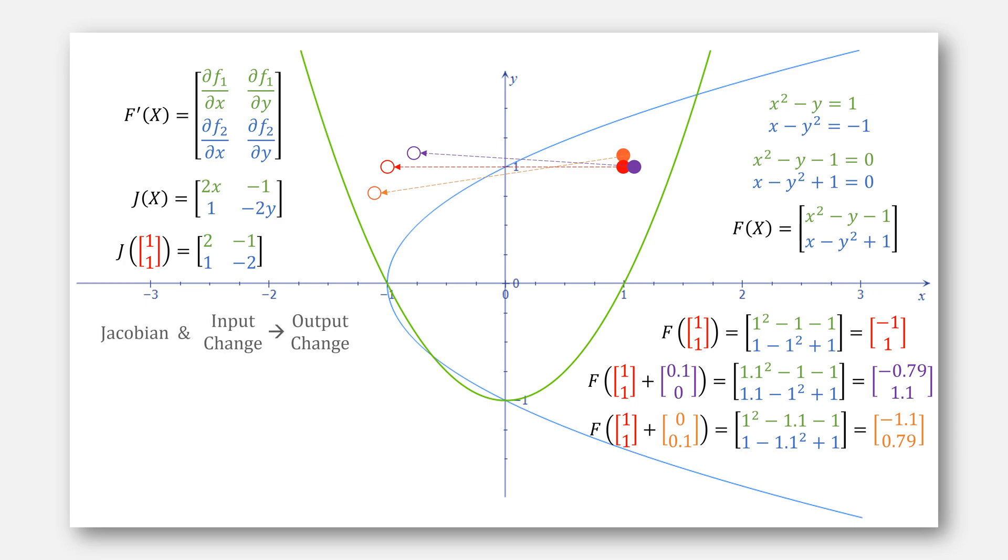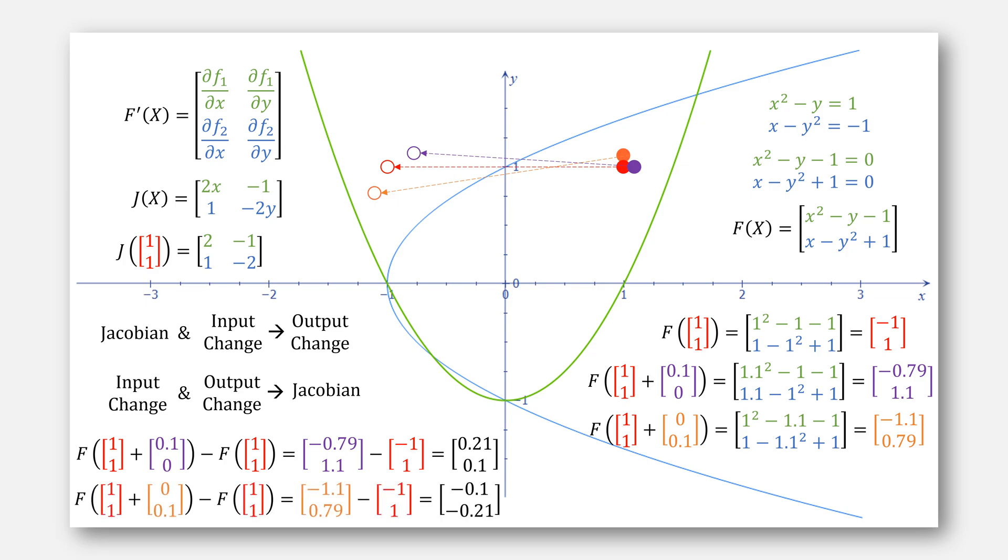This means that if we know the Jacobian and our change to the input, we can predict our change to the output. What if instead we use our input and output changes from those we can actually figure out our Jacobian? By taking the difference between our actual change to the output and our function at that point, this gives us these values. We can use them to try to figure out the Jacobian.